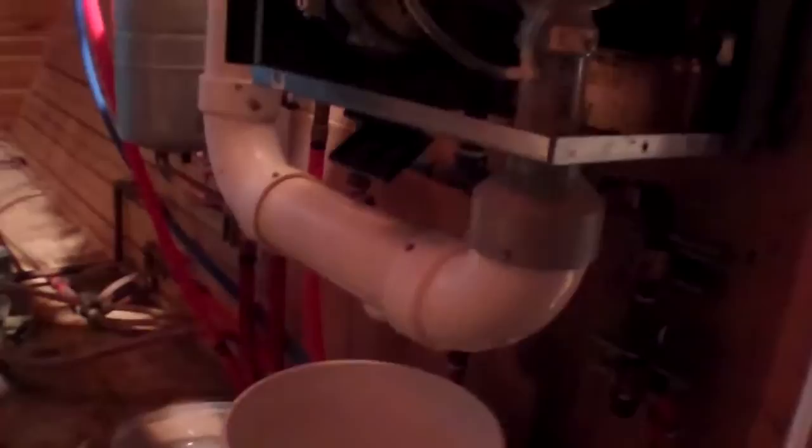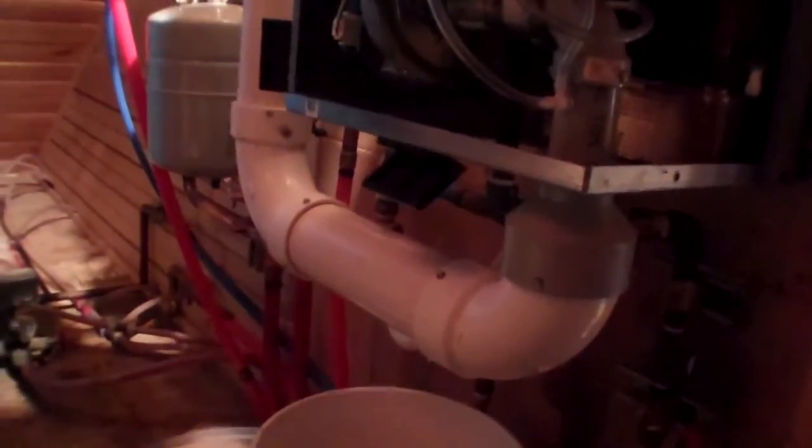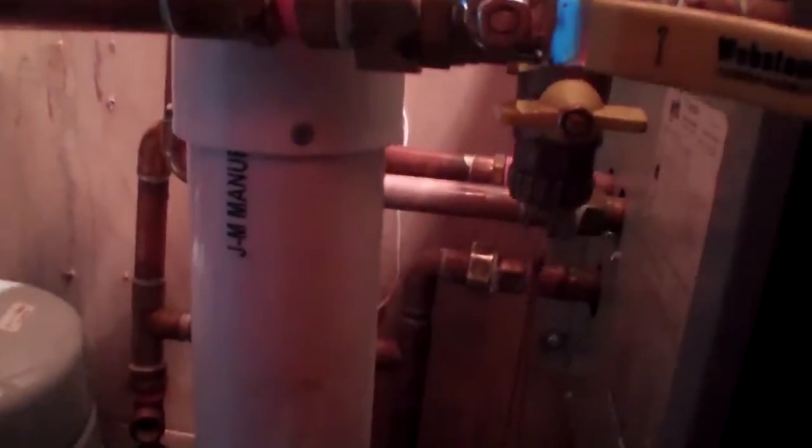So we just got our exhaust reinstalled and have the boiler running now. After going back through and getting everything all remounted, you can see all of our connections are locked and secured. No leaks. No drips.